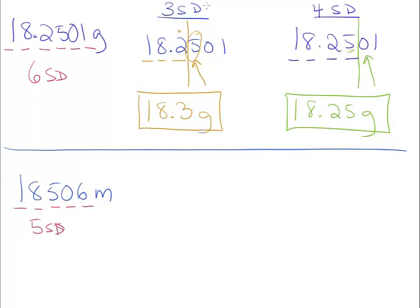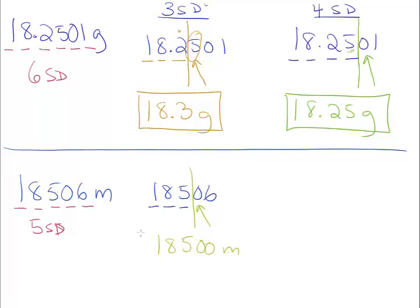Rounding 18,506 to three significant digits: we keep 1, 2, 3, and place our barrier. The digit we focus on is 0, which is definitely less than 5, so we leave the third digit alone. But be careful — the answer is not 185; it's 18,500. We can't change the magnitude of the number. 185 is much less than 18,000, so watch for that. Rounded to three significant digits: 18,500 meters.